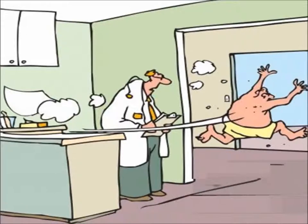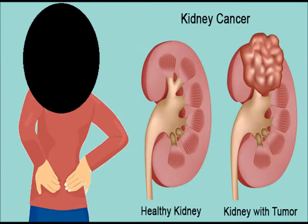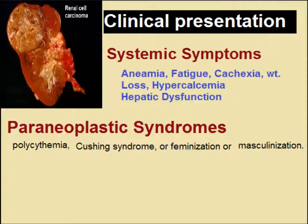The clinical presentation of renal tumors includes the classic triad of flank pain, hematuria, and abdominal mass. However, classically only five to ten percent present with all three. Hematuria alone is the presentation in forty-five percent of cases. Some may present with flank pain only.